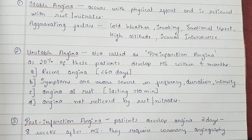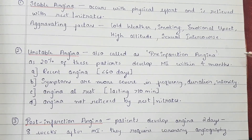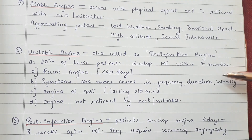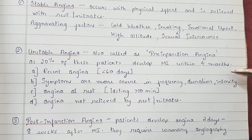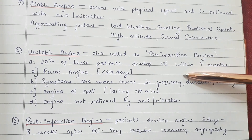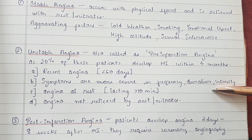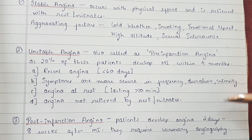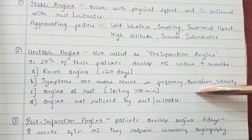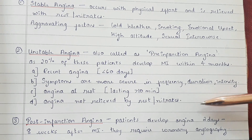The second type is unstable angina, also called pre-infarction angina, as 20% of these patients develop MI within 4 months. This includes recent angina that is less than 60 days. The symptoms are more severe in frequency, duration, and intensity. Angina at rest lasts for more than 10 minutes and is not relieved by rest or nitrates.